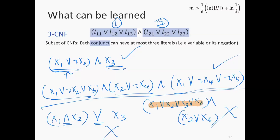Let's pretend that nature chooses its oracle function from the set of all possible 3CNFs. The question we have to answer is: is this concept class PAC learnable in the consistent case? Any questions about this function class before we proceed?